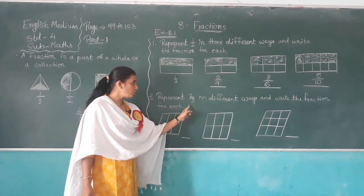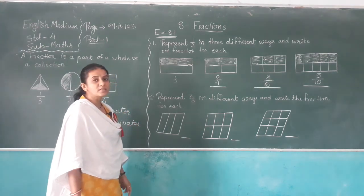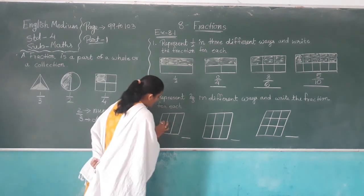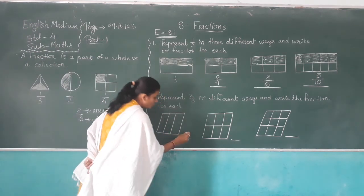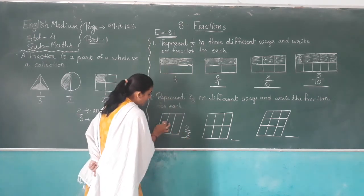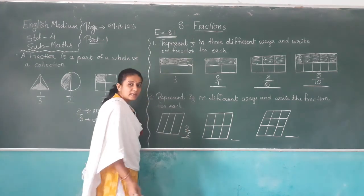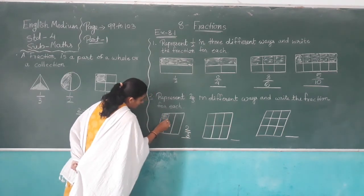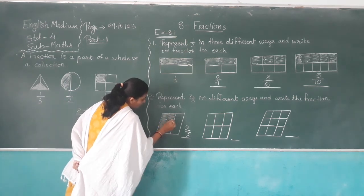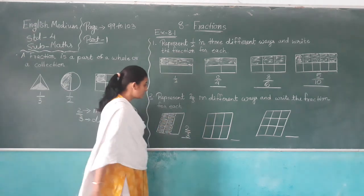Represent two out of three in a different way and write the fraction for each. Here there are three fractions and three parts. Two out of three are shaded, so two parts are shaded. It represents two out of three.